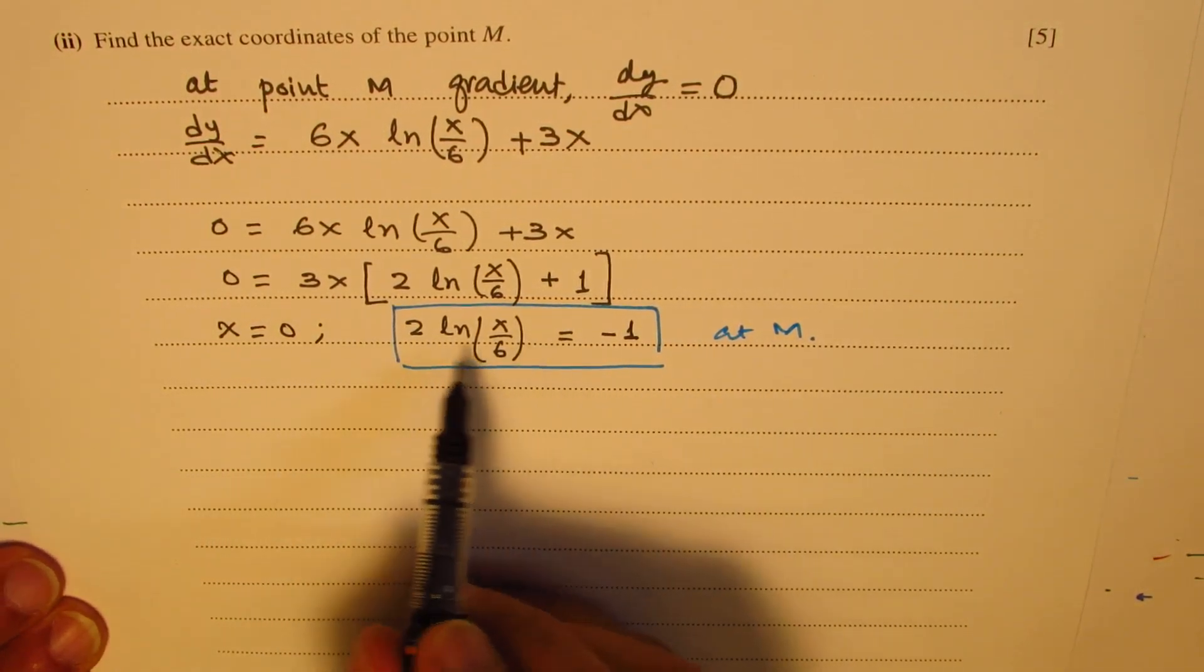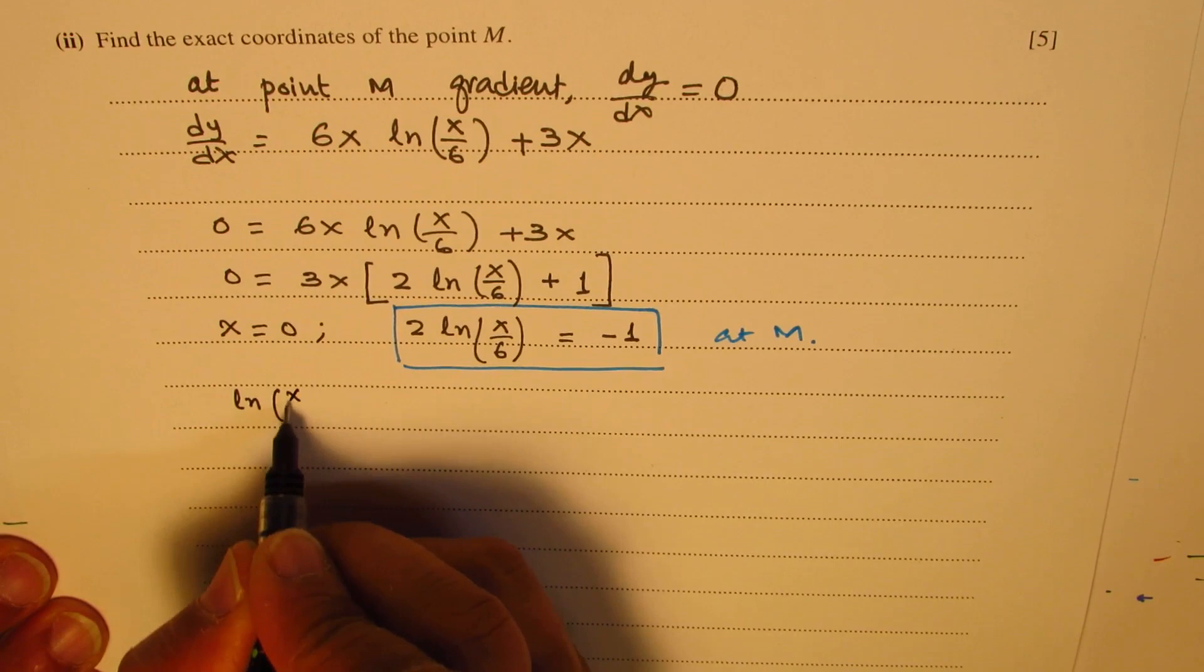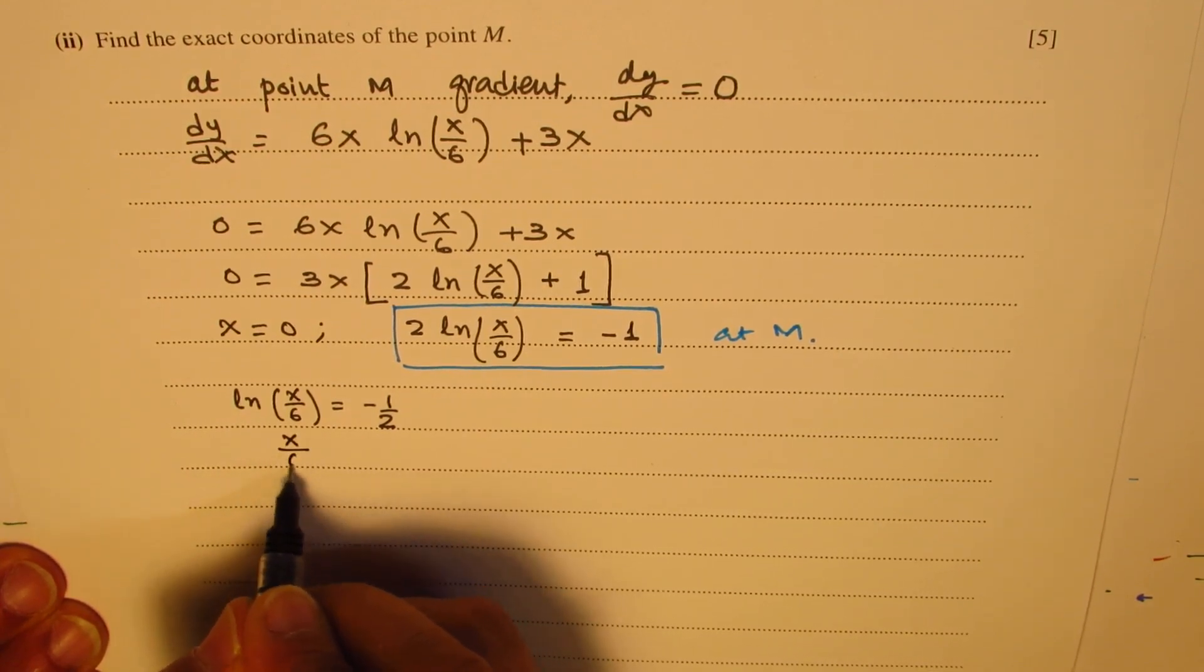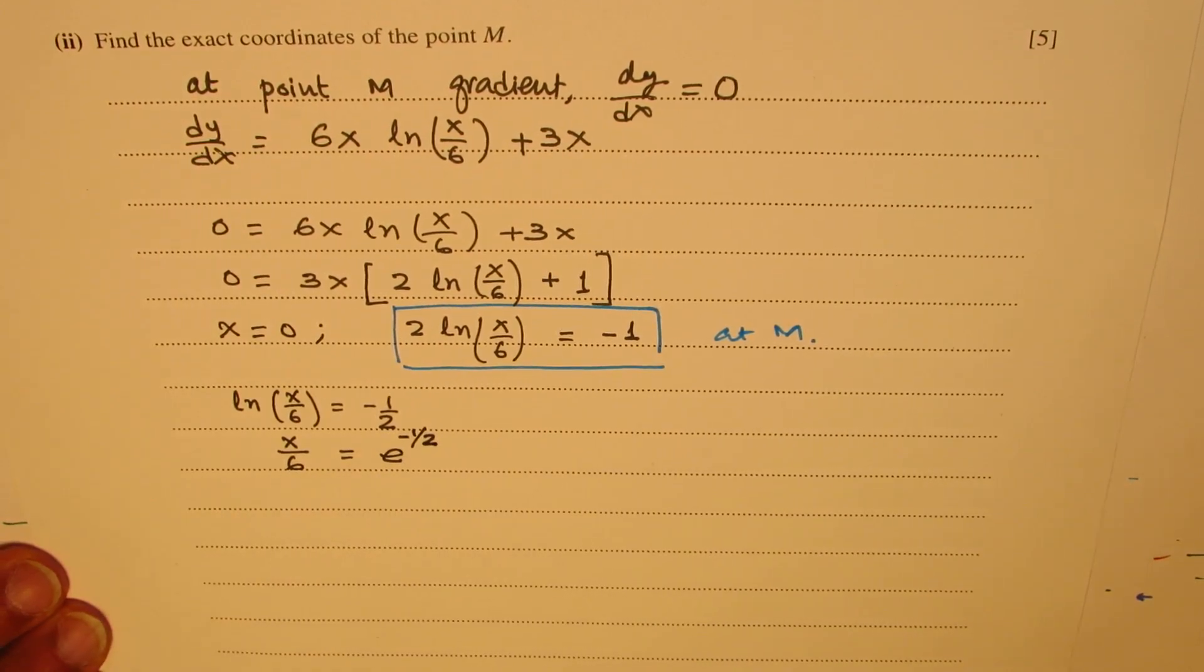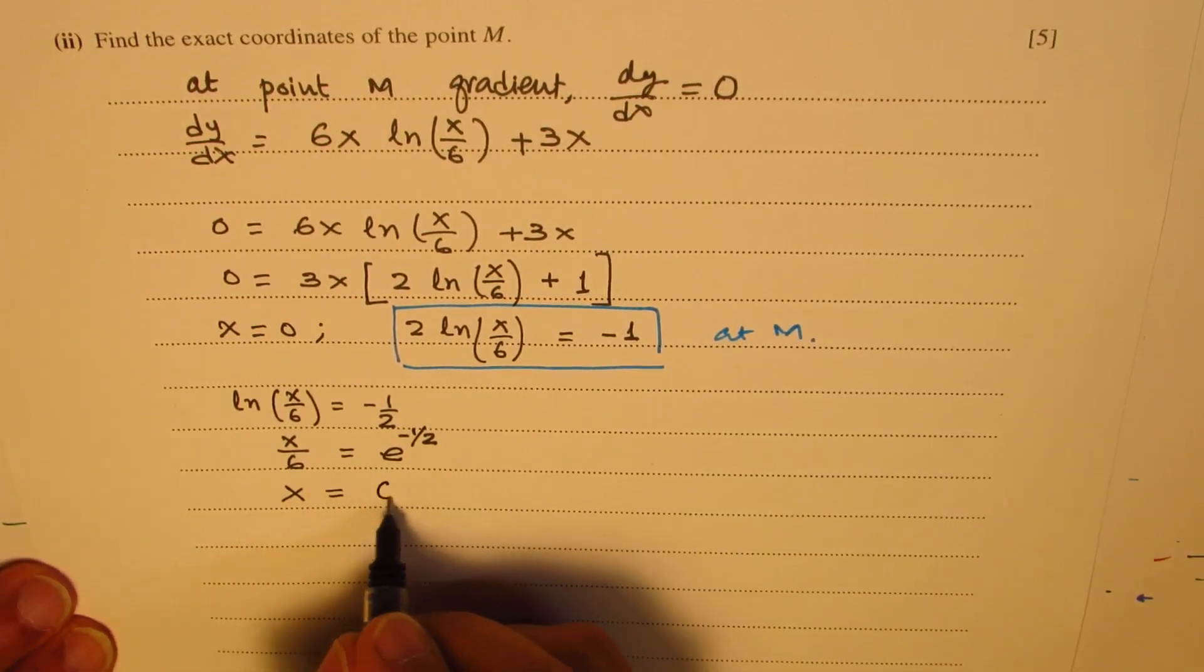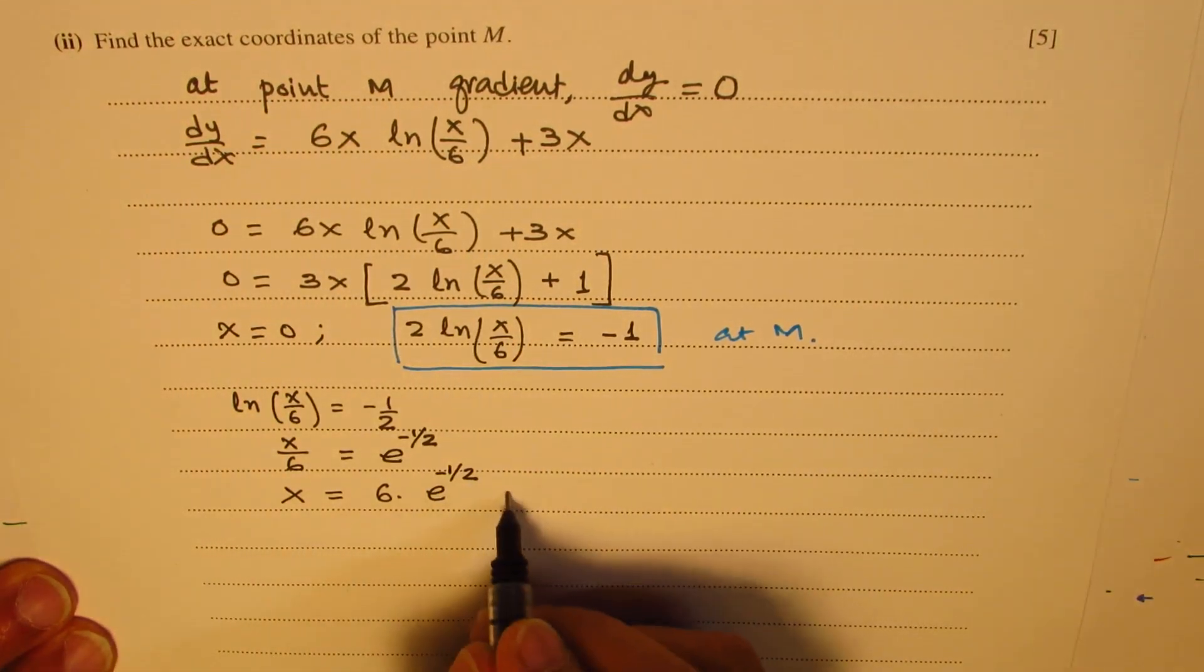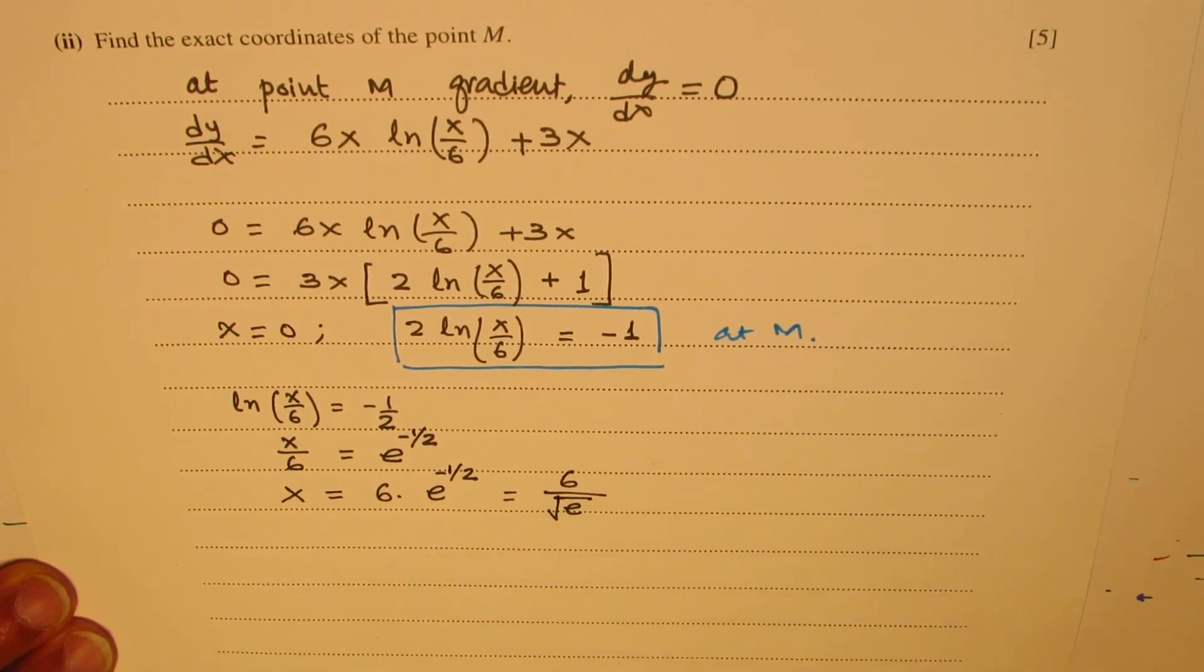So that gives you ln(x/6) is equal to minus half. Taking e on both sides, we get x/6 equals e to the power of minus half. So we get, from here, we can write x is equal to 6 times e to the power of minus half. So that becomes the coordinate. We need to find exact coordinates. So we could write this as 6 over square root of e. That gives us the exact coordinate for x.